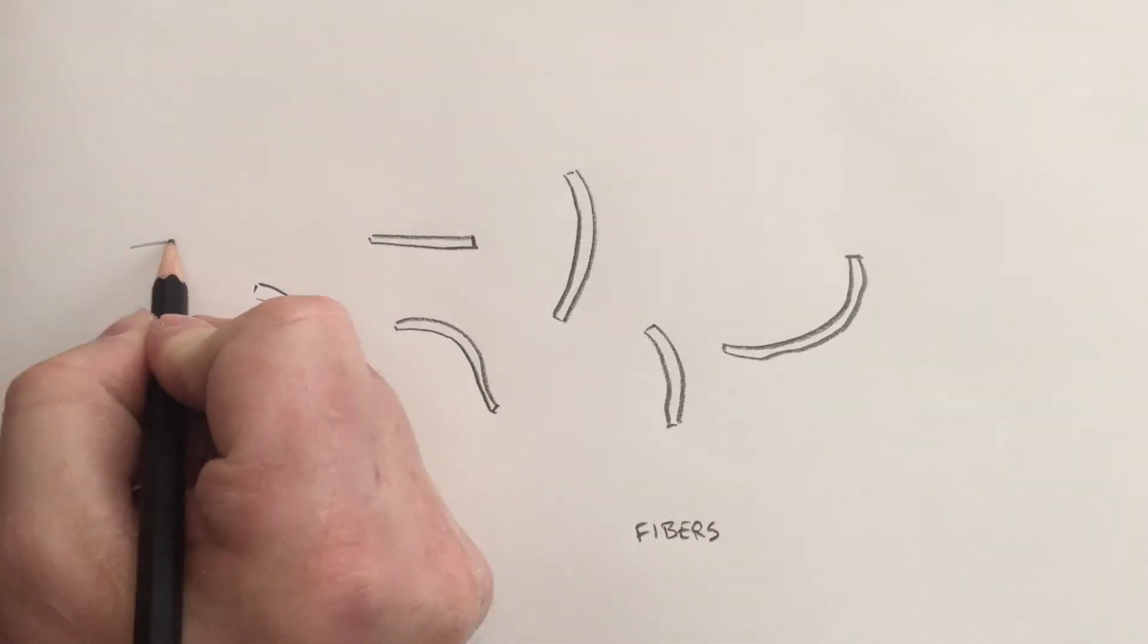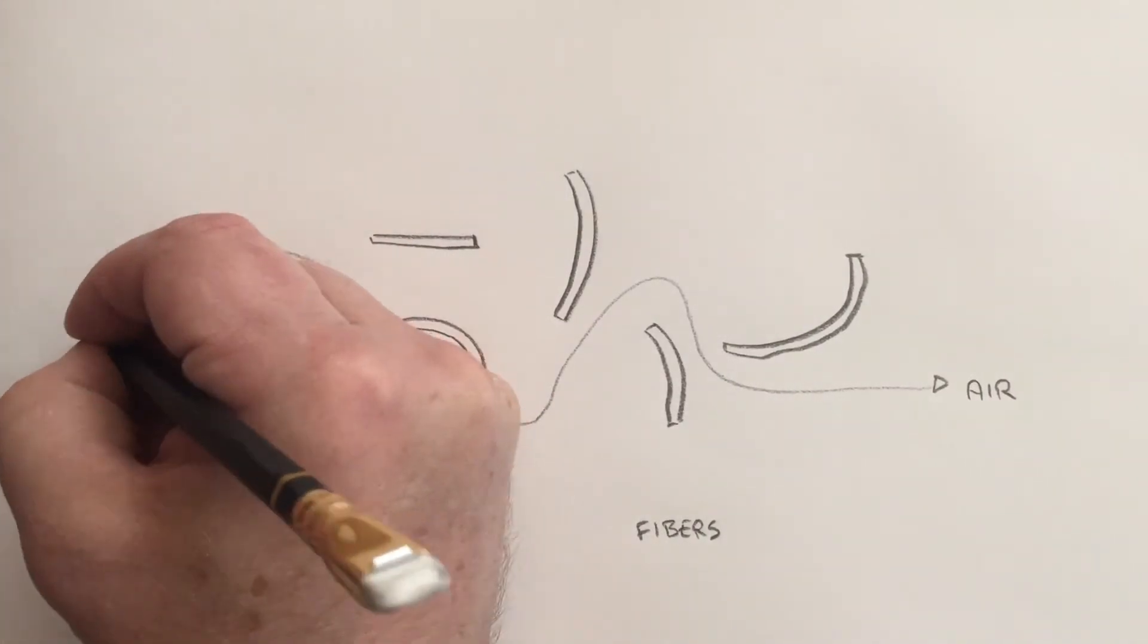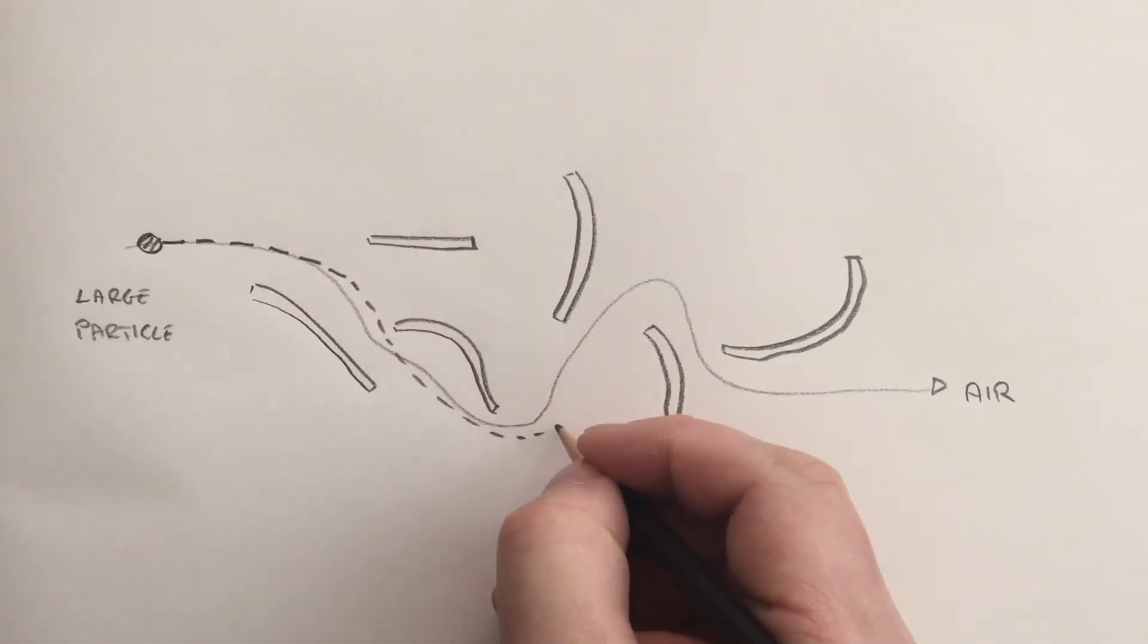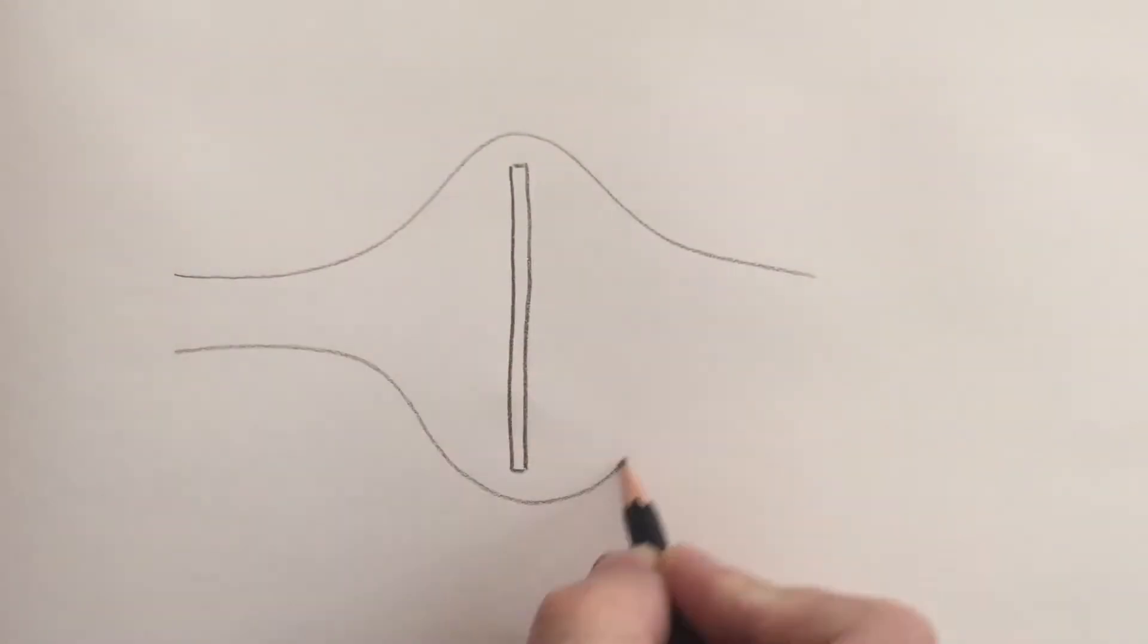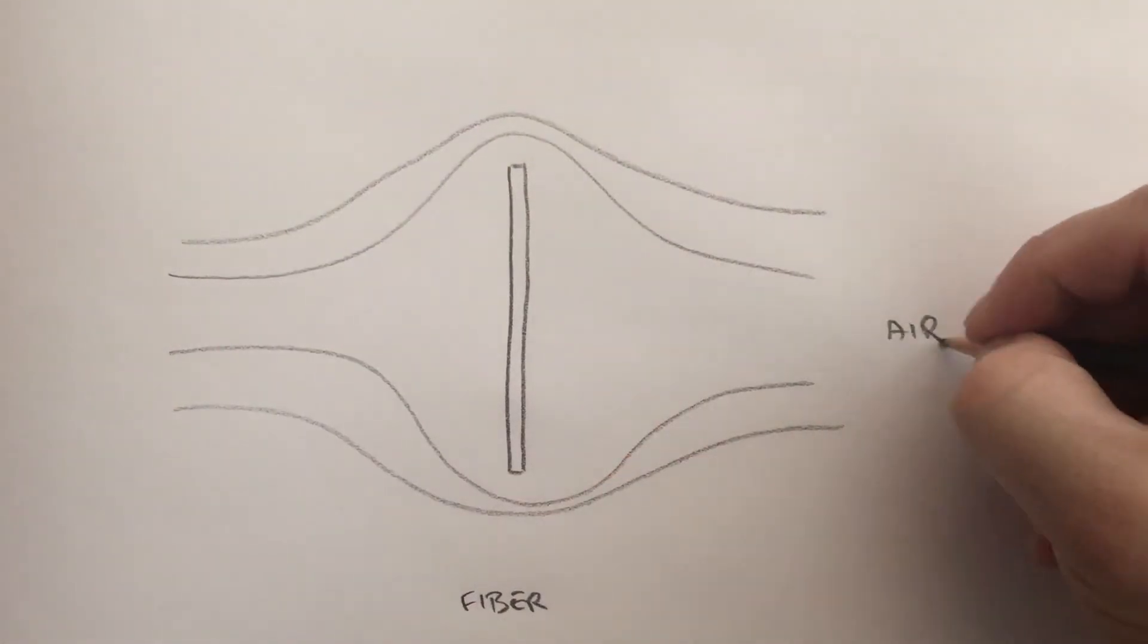It's the same for small particles speeding through an air filter. As the air twists and turns, the particles can't keep up, and ultimately they end up crashing out and being caught. Because of their inertia, which just like the car depends on how massive they are and how fast they're going, they can't stay the course.